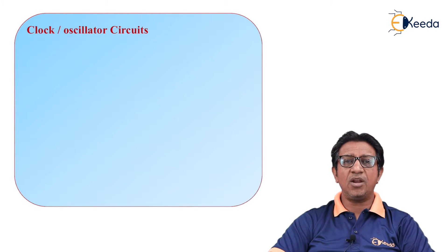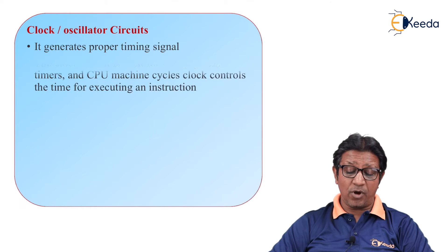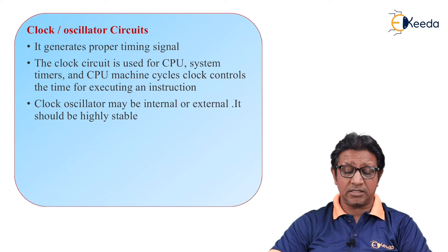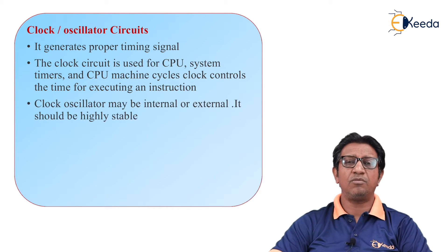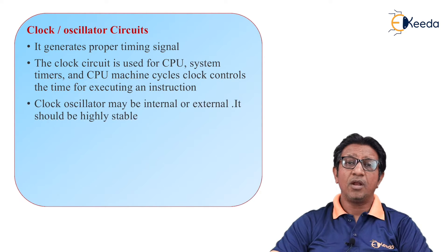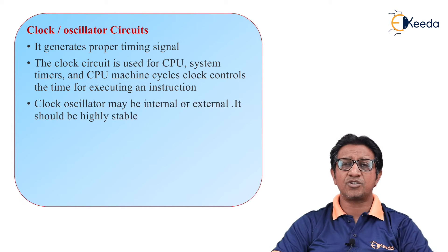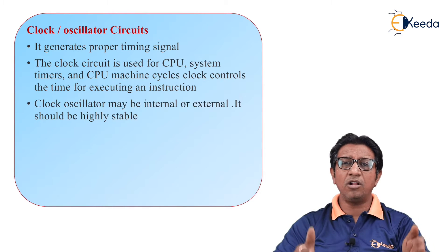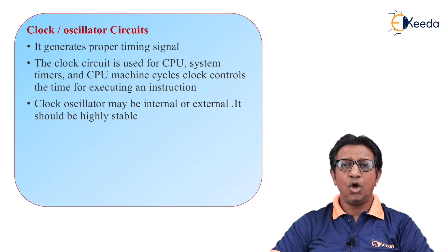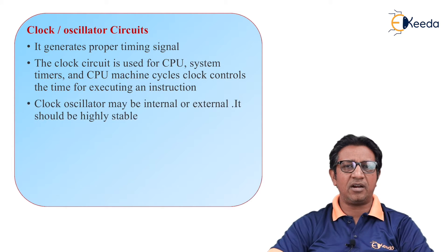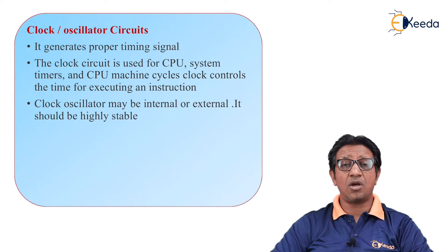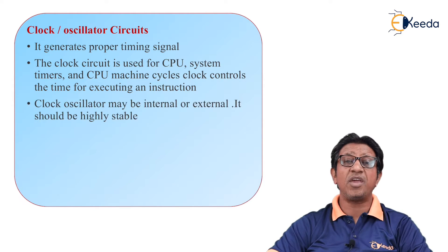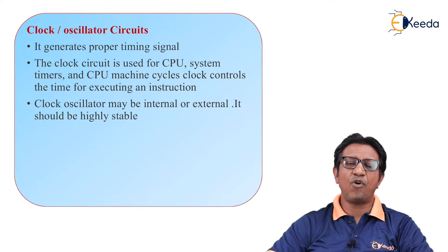The next is the clock and oscillator circuit. Its purpose is to provide proper timing signals. The clock is used by the CPU, timer, and many other subsystems of the embedded system. When the processor is functioning, it must read an instruction, fetch data, process the data, and give results — all done in proper time. Clock can be generated with a crystal or additional clock circuitry, either internal or external, but this circuit must be highly stable.